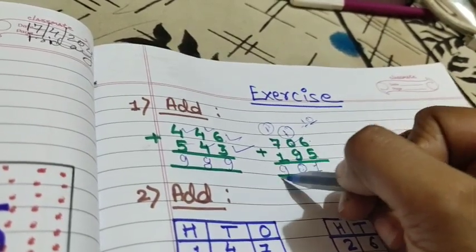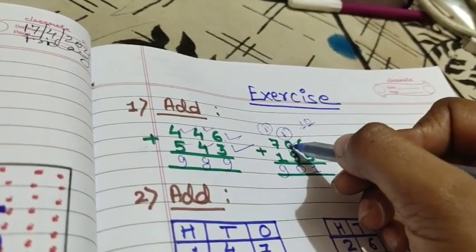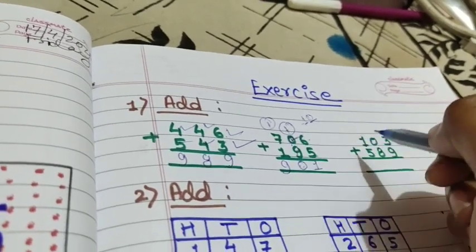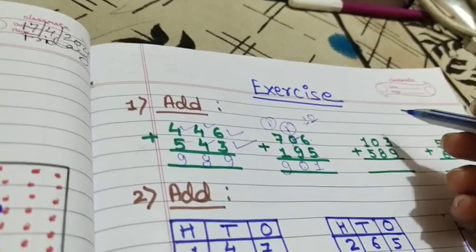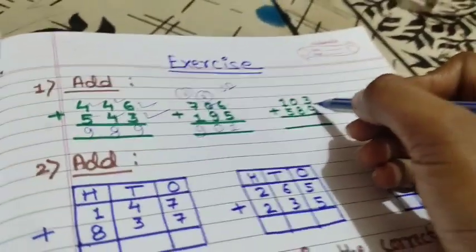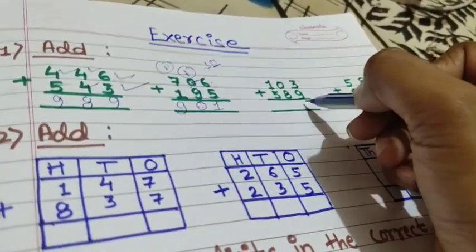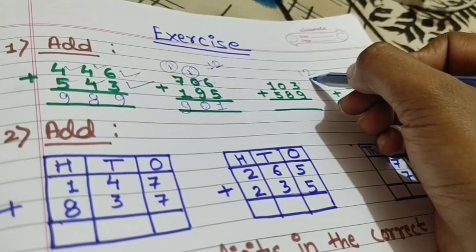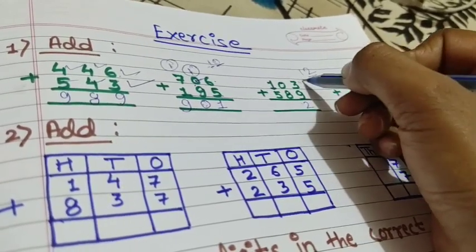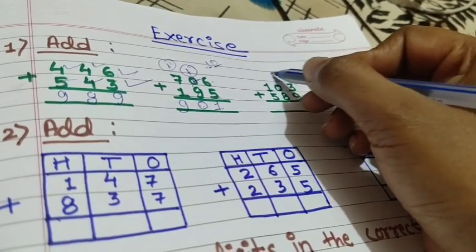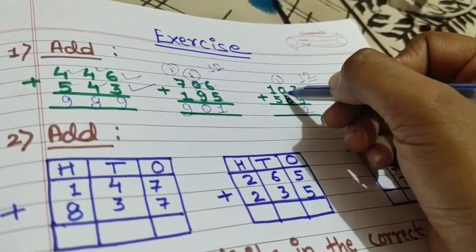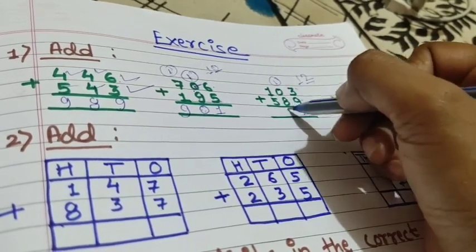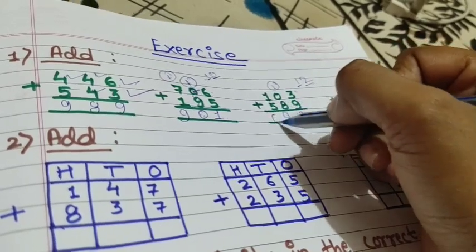Carry 1 here, so 1 plus 7 is 8. 8 plus 1 is 9. Next, 3 plus 9 is 12 — ones place digit is 2, tens place carry 1. 1 plus 8 is 9. 1 plus 5 is 6.